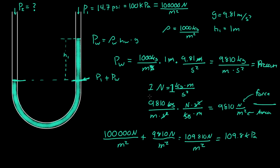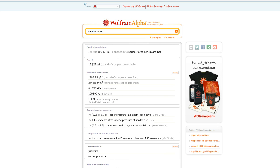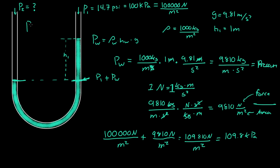Let's go to Wolfram Alpha to convert that into PSI. So 109.8 kilopascals converts to about 15.92 PSI. So P2 is equal to 15.925 PSI. We found the pressure of P2 without even knowing the cross-sectional area of this tube - all we needed to know was the height.